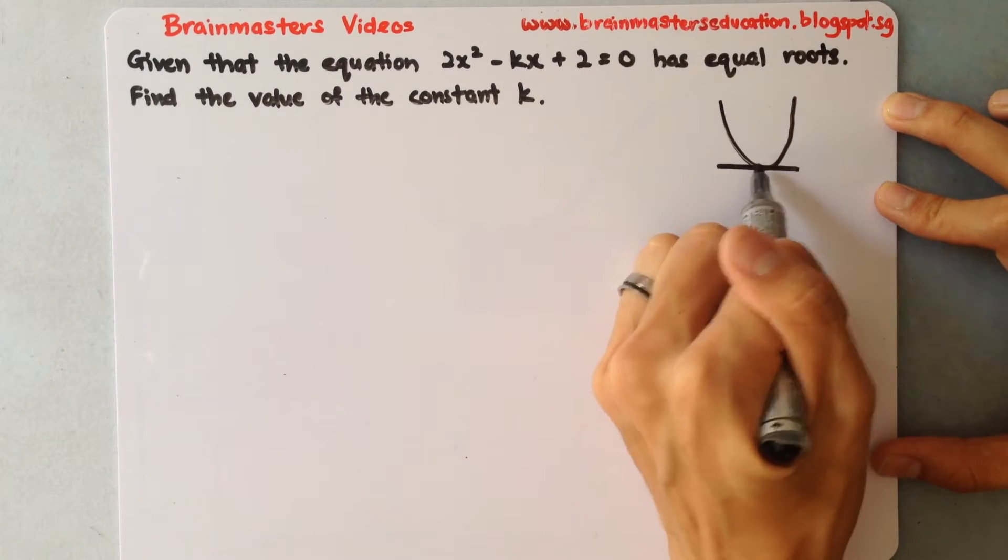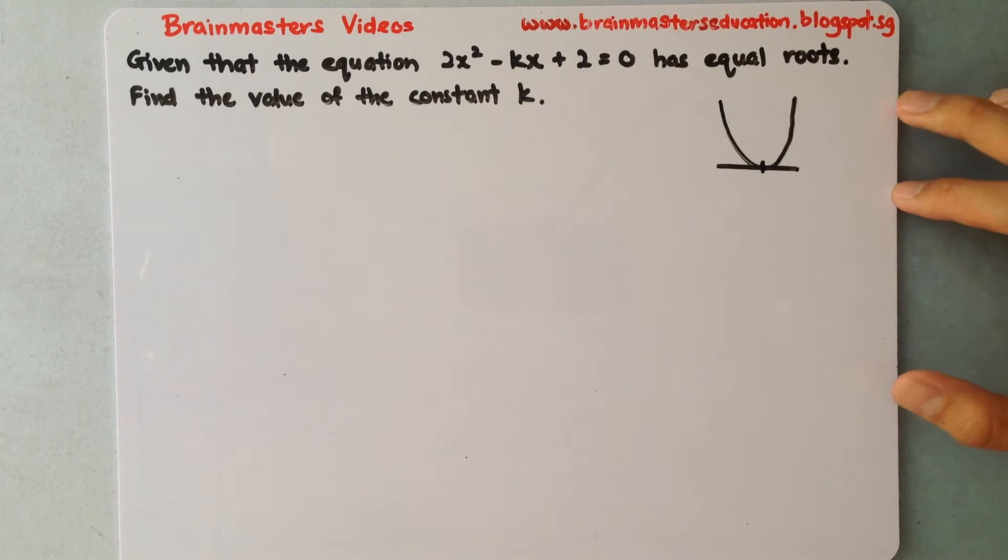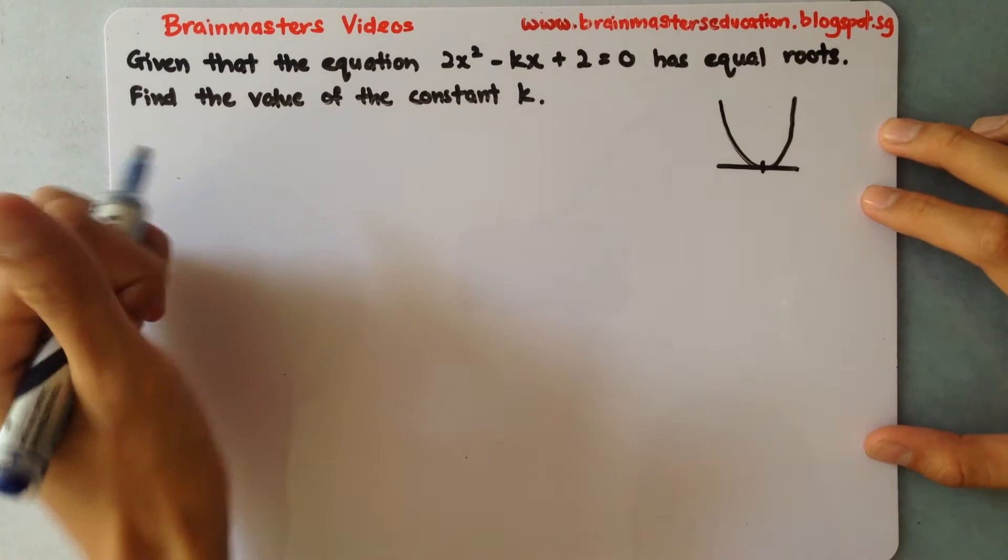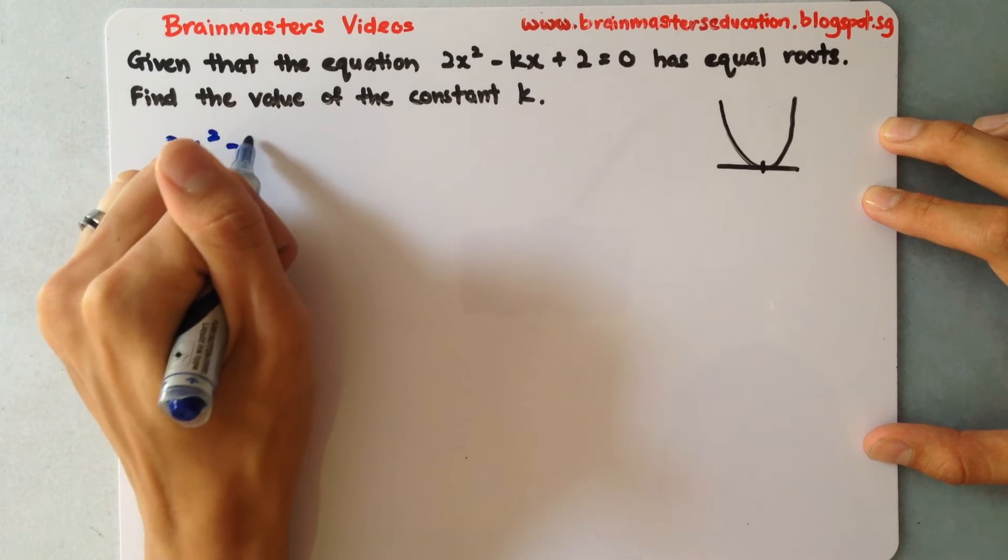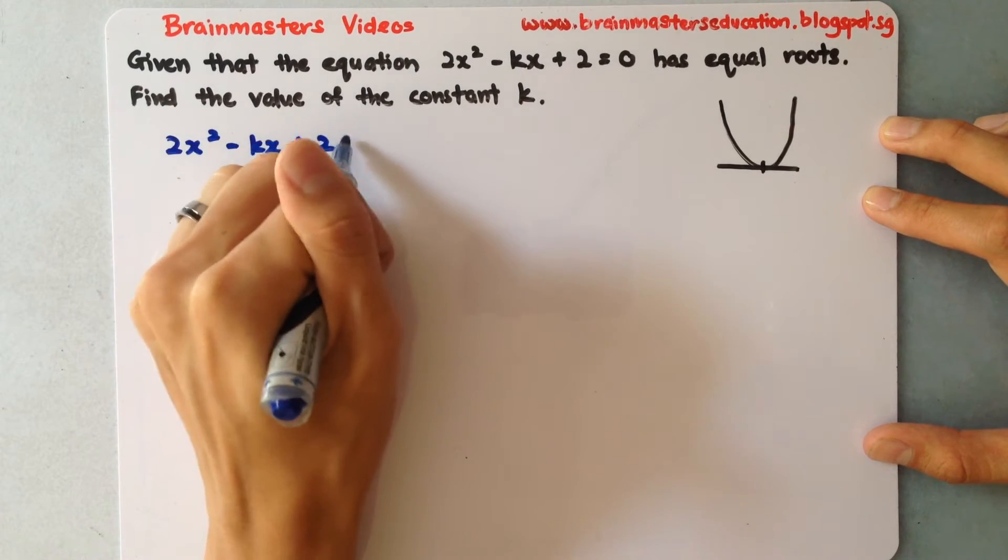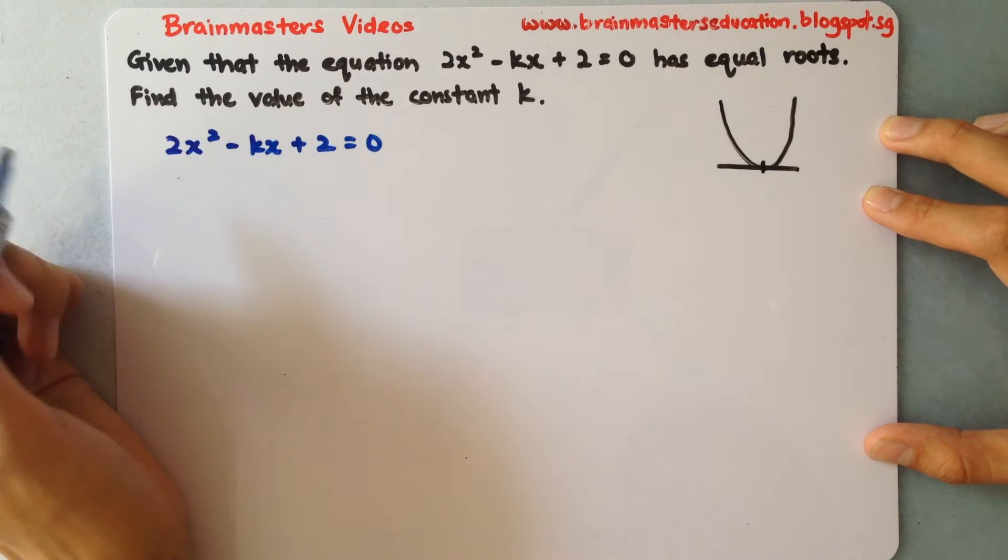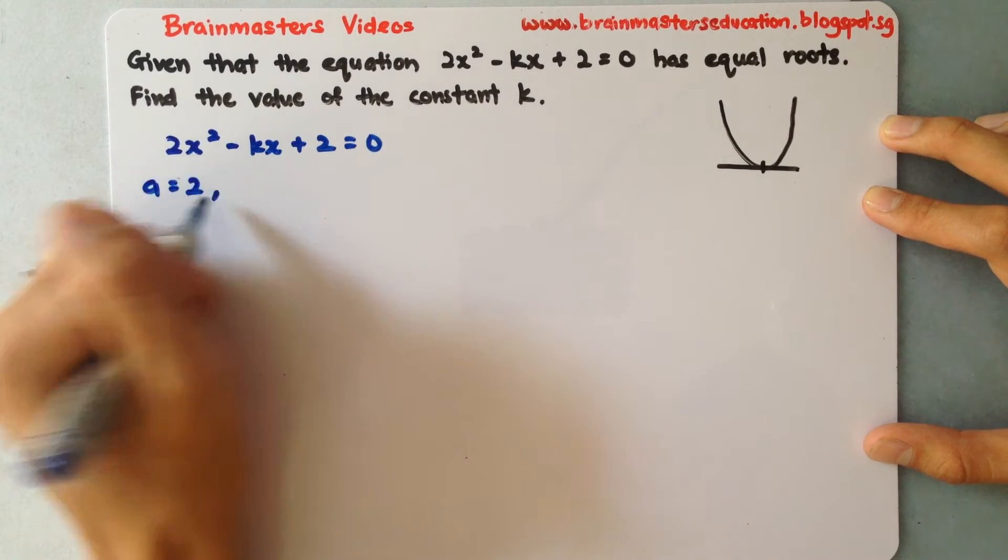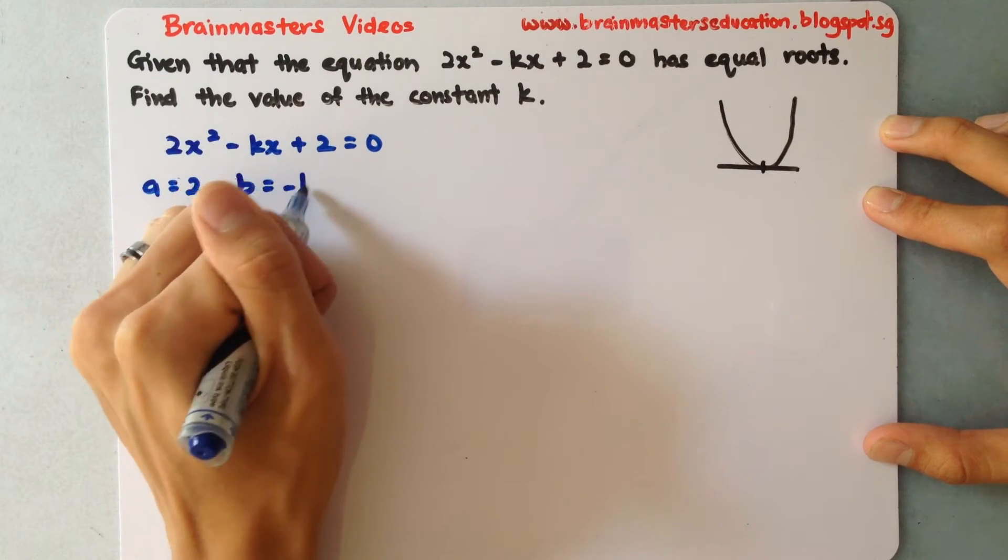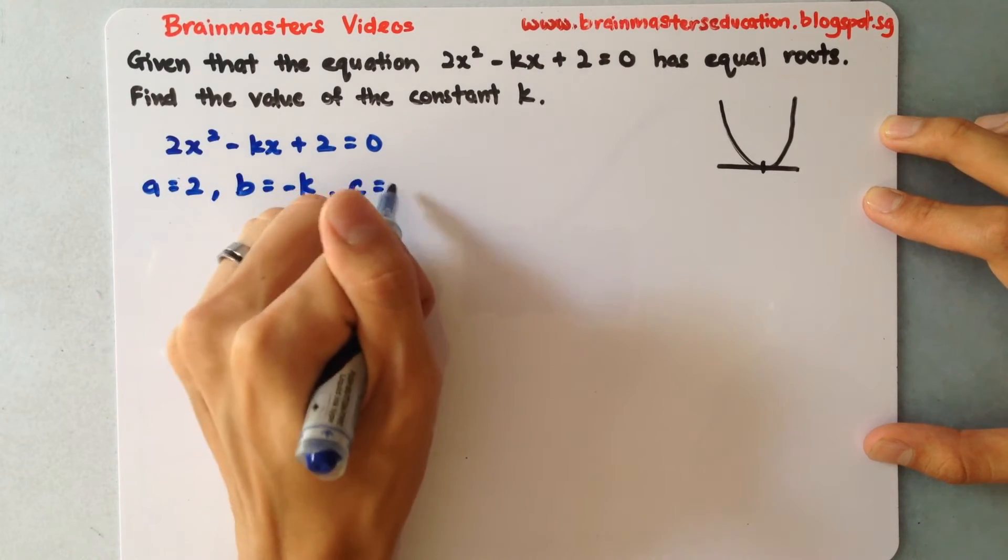Okay, so what we have to do is find out the values for our discriminant. This is the equation: 2x squared minus kx plus 2 equals 0. Over here we have to identify what's our a, b, and c. So a will be 2, b will be negative k, and c will be 2.